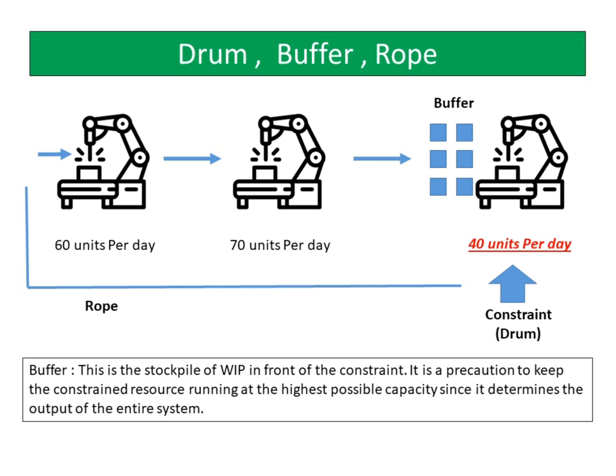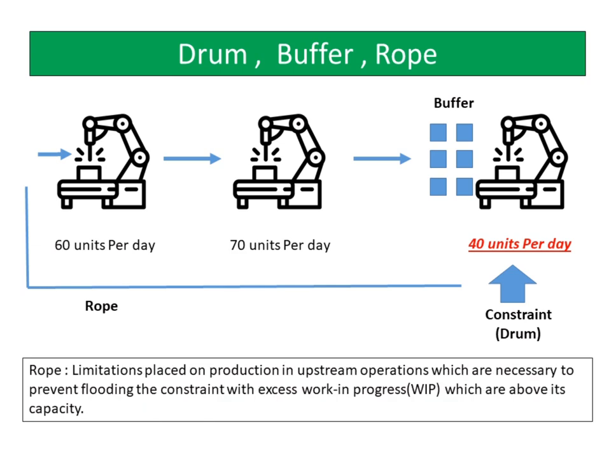The customer buffer, at the very end of the process, protects the shipping schedule. The rope is the limitations placed on production in upstream operations, which are necessary to prevent flooding the constraint with excess work-in-progress (WIP) above its capacity. The rope is a signal generated by the constraint indicating that some amount of inventory has been consumed, which in turn triggers an identically sized release of inventory into the process. The role of the rope is to maintain throughput without creating an accumulation of excess inventory.